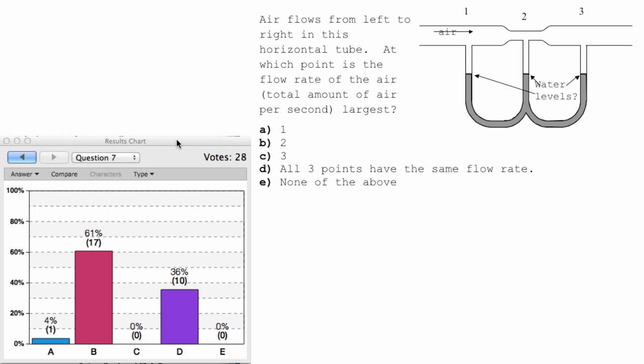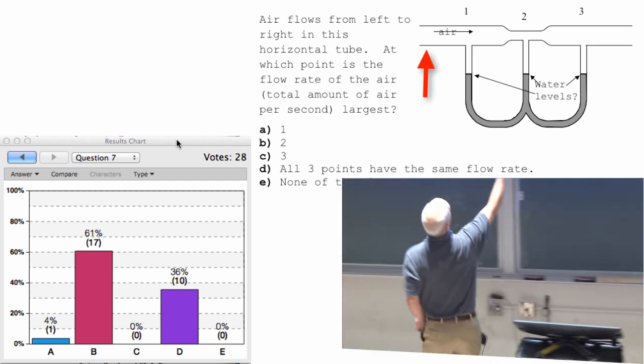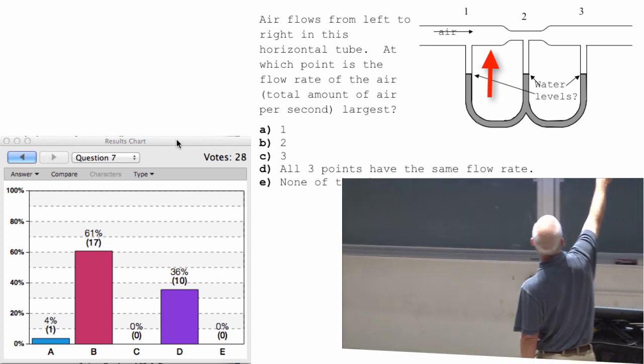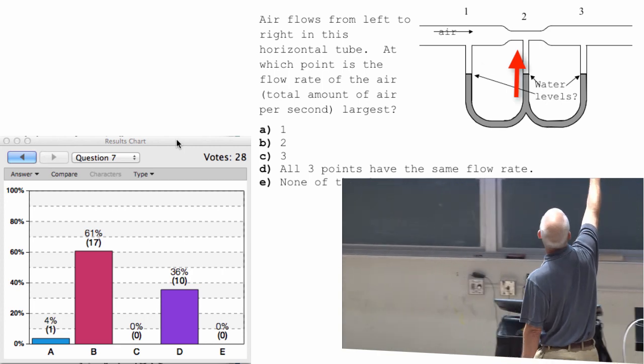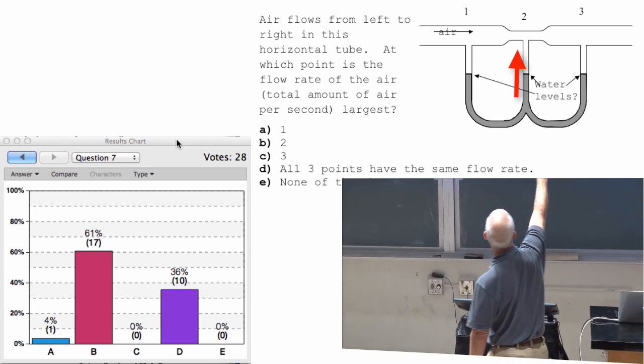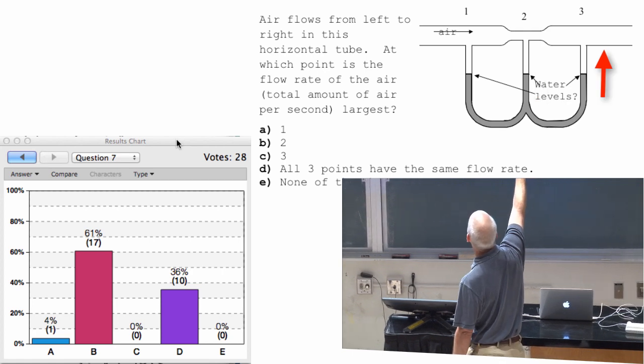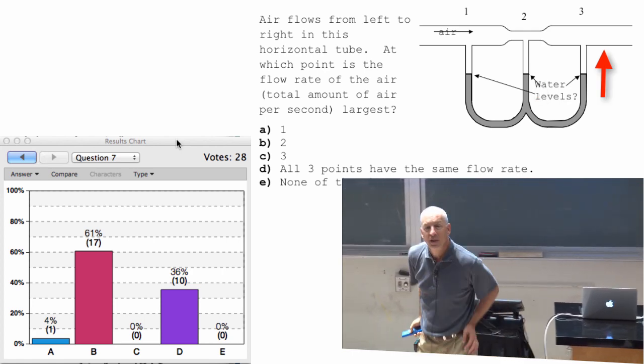If we pretend air is incompressible, and I put a liter of air in here every second, then a liter of air goes past here every second, a liter of air goes past here every second, a liter of air goes past here every second, and a liter of air goes past there every second.